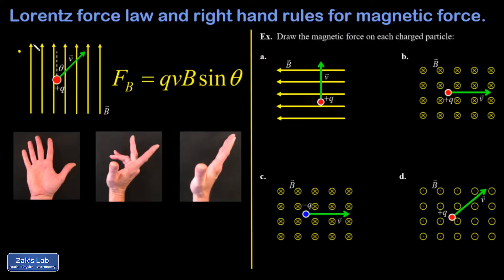So in the picture on the left, I have a magnetic field pointing up. I have a charged particle with a positive charge moving through that magnetic field at some angle with respect to the magnetic field. Looks like it's in the neighborhood of 45 degrees, and there's my velocity vector and my speed would be v.